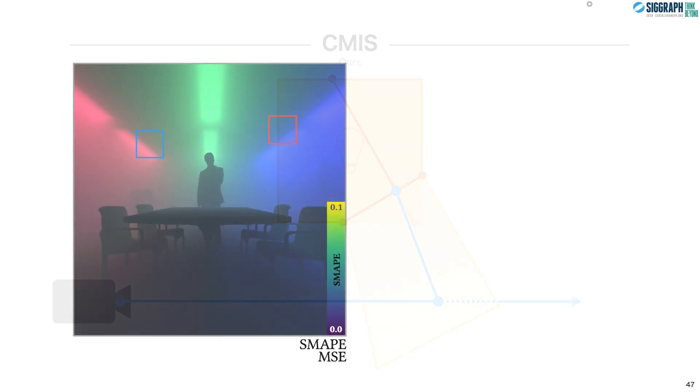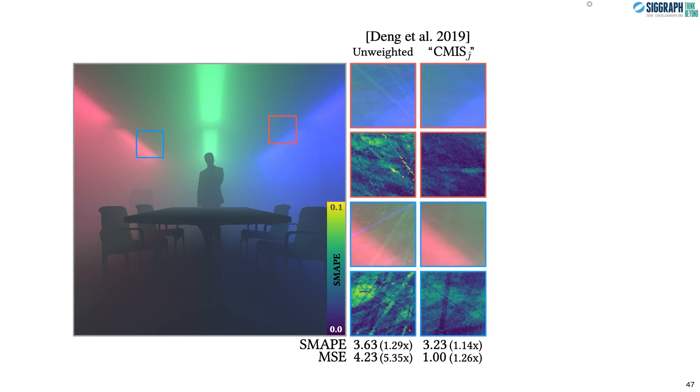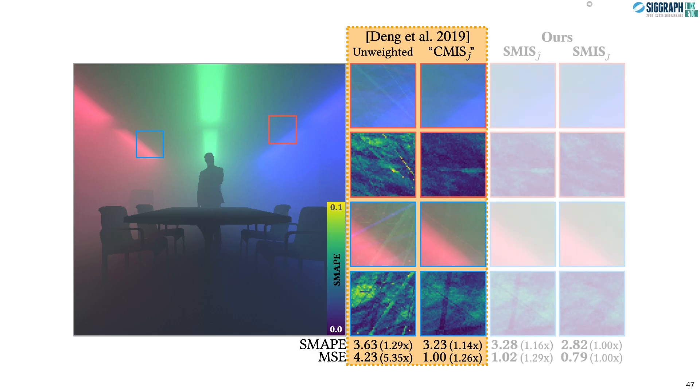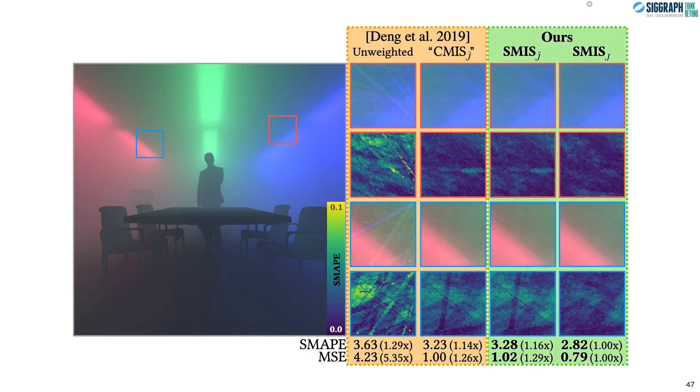So how do these two methods compare? Here we have a boardroom scene lit with several colored area lights and filled with smoke. In the first column, we have the unweighted photon planes estimator. In the second column, we have Deng and colleagues' analytical weights, which shows a large improvement over the unweighted results. In the third column, we have a two-sample SMIS estimator with weights that, similarly to the approximate weights of Deng and colleagues, treat all edges as being equal length. And in the last column, we have the same two-sample SMIS estimator but using the approximated balance heuristic weights, which shows even further improvement providing the lowest error estimates.